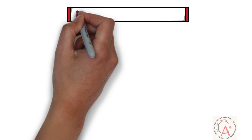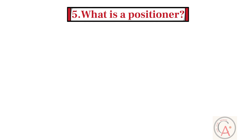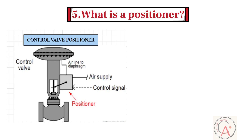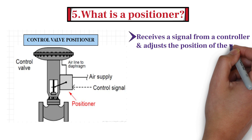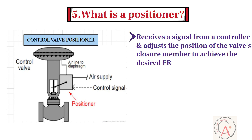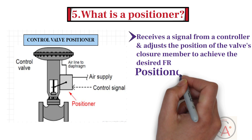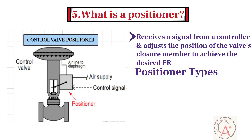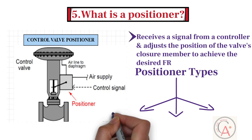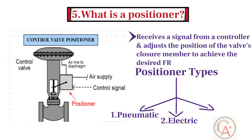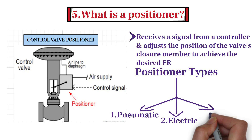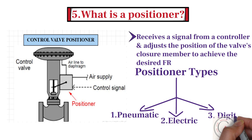Fifth question: what is a positioner? A positioner is a device that receives a signal from a controller and adjusts the position of the valve's closure member to achieve the desired flow rate. There are three different types of positioner: pneumatic positioner, electric positioner, and digital positioner.